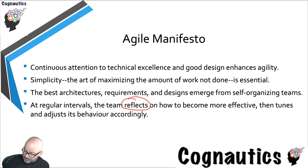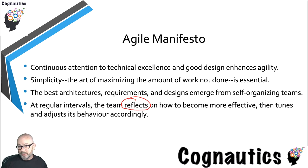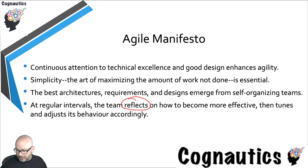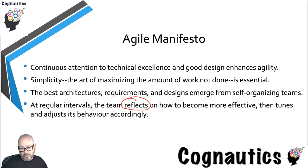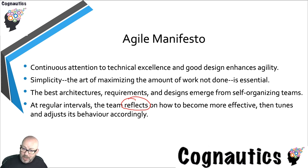Teams reflect on how to become more efficient and then adjust their behavior accordingly. Don't forget — when we use the word agile normally we're talking about a cougar or a puma who can move very quickly and change direction; someone who does parkour is agile. So it's being able to change to whatever circumstances you're faced with.